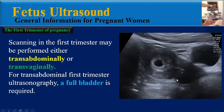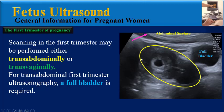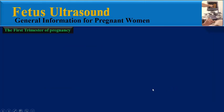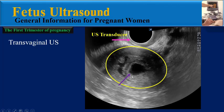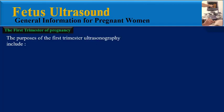This is a transabdominal ultrasound image where we can see the abdominal surface, full bladder, the womb, and the pregnancy sac in the womb. And this is a transvaginal ultrasound image — here is the ultrasound transducer, the womb, and the pregnancy sac in the womb. These are the purposes of first trimester ultrasonography.